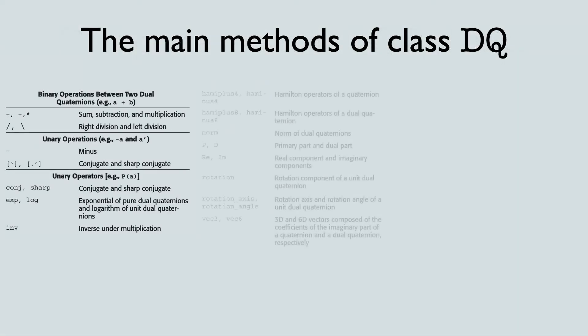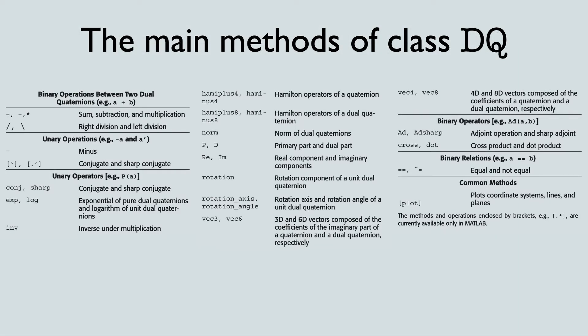The library is based entirely on object-oriented programming. The most basic class that implements all algebraic operations is the Diki class. It implements basic binary operations between two dual quaternions, such as addition, subtraction, multiplication, and right and left division.